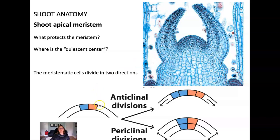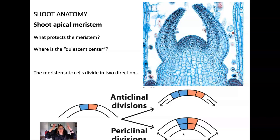Meristem cells can divide in two directions. They might divide sideways to produce new cells in an anticlinal fashion. Periclinal divisions allow the plant to increase in length or height. Anticlinal divisions are necessary when making new tissues to create a broader plant. Periclinal tissue divisions are much more frequent and important in axillary growth of the shoots.